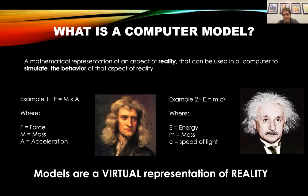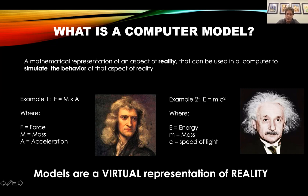Let's define what a computer model is. This is one definition I put together: it's a mathematical representation of an aspect of reality. Models make a representation of what exists out there in the real world. You may recognize Isaac Newton — he modeled something very important. He didn't do it on a computer, but he came up with the equation force equals mass times acceleration, which formed the basis for a lot of the advancements we see today.